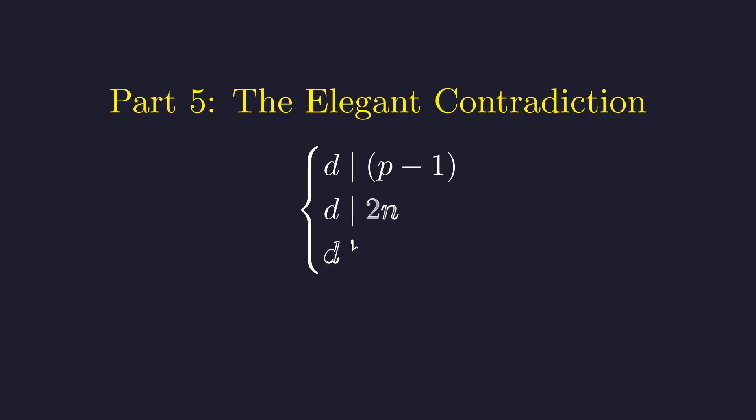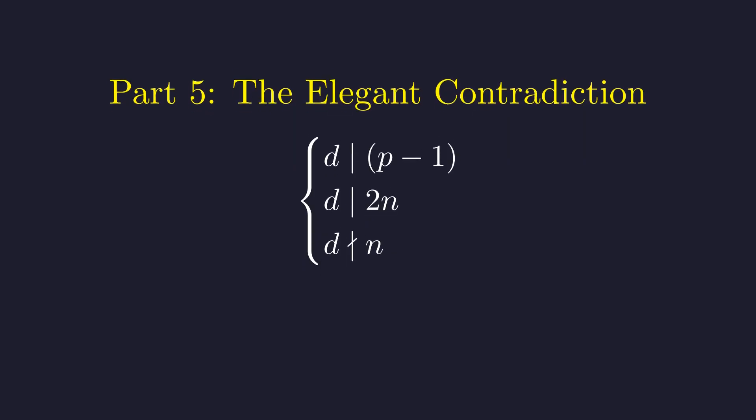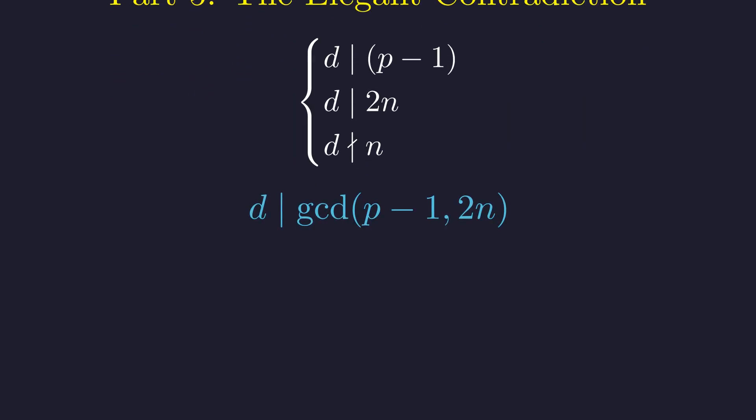Let's organize our knowledge. d divides p minus 1, d divides 2n, but d does not divide n. The first two conditions tell us that d must divide their greatest common divisor. Therefore, d divides the greatest common divisor of p minus 1 and 2n.